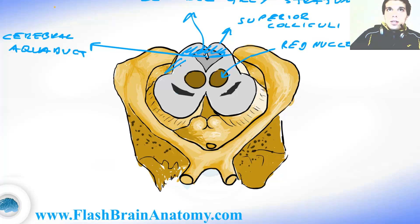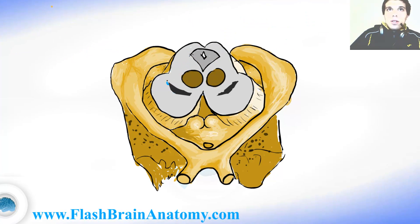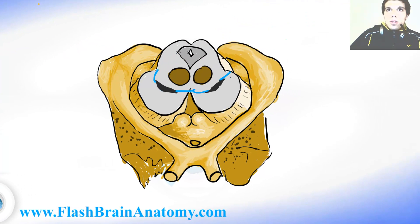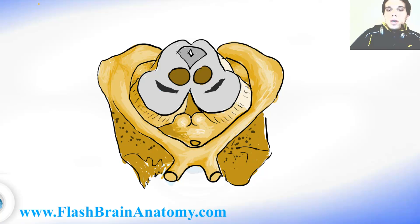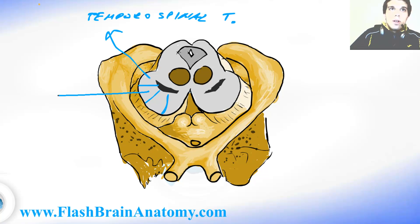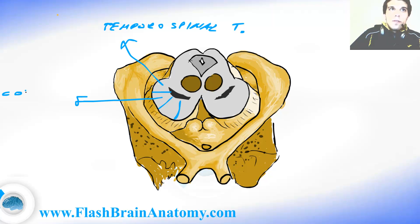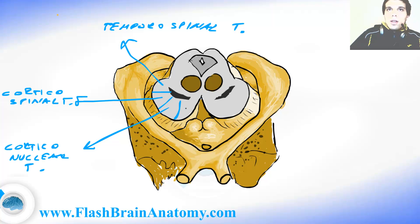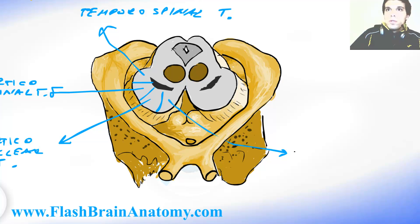We have the tegmentum over here and the tectum over here. Now let's get back to the crus cerebri. This part and this part is the crus cerebri. It contains only the ascending pathways — it contains the efferent tracts. There are four of them: one over here is the temporospinal tract, another one is the corticospinal, then comes the corticonuclear tract, and the last is the frontopontine tract.